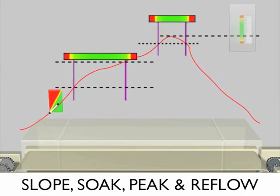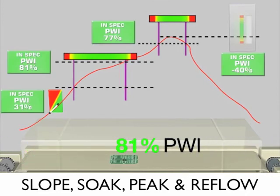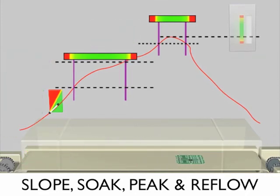Here's an example of a robust profile. 81% PWI gives your process plenty of room without any of your production running out of specification.